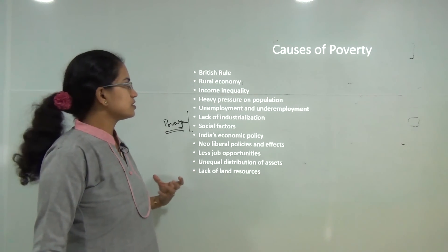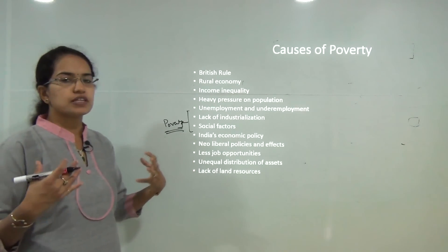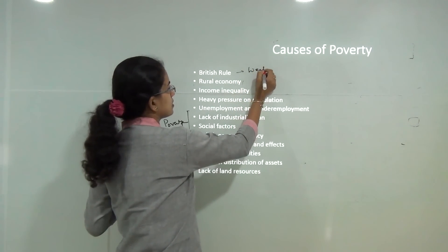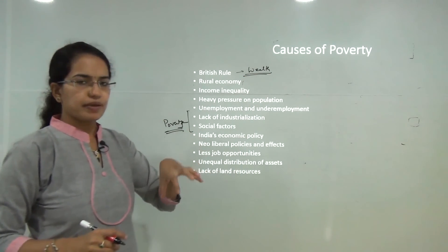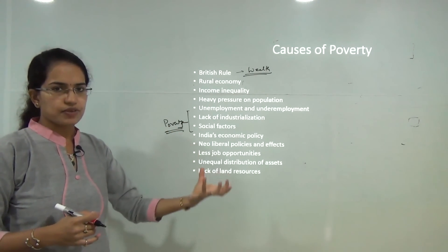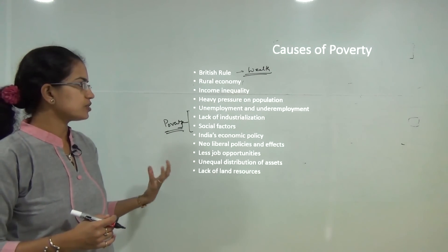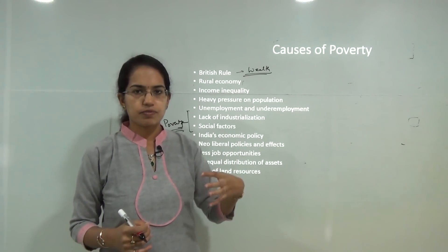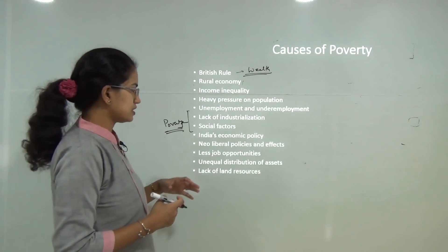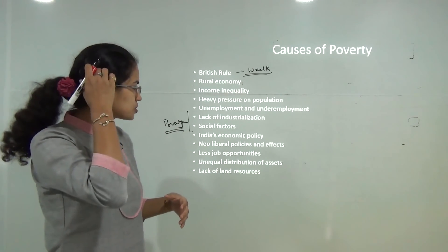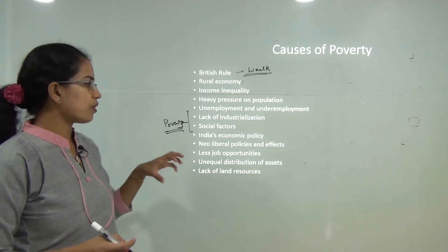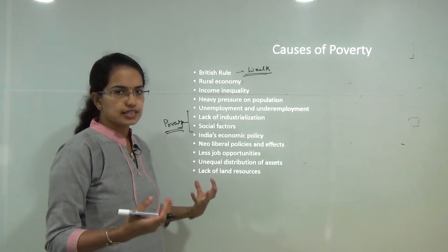The basic causes of poverty began with the colonial era — the drain of wealth from India was the main cause. The rural economy was most affected as resources were taken away by the British. With the rise in population, there is heavy pressure on land, creating unemployment and underemployment. There is insufficient industrialization, and social and economic policies affect certain sectors badly.